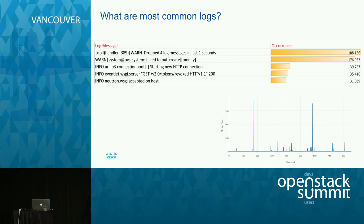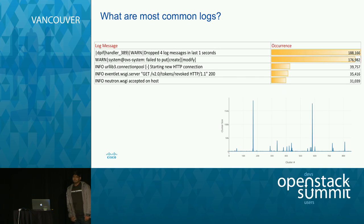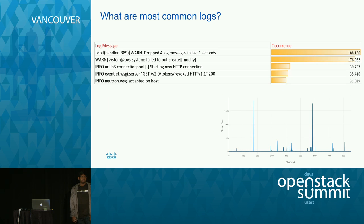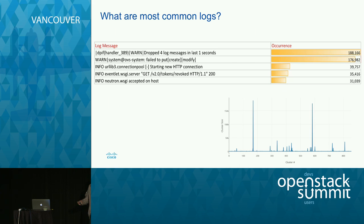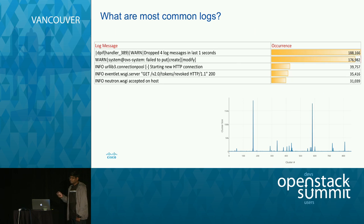At the very first step we found something weird. The first two biggest log groups, in the range of 180,000 frequency, were actually warning logs being generated by OVS. When we dug deeper, we found that when we were installing the cluster, we were supposed to put the first interface as the management interface and the second as the data interface, but we had done it the other way around. This analysis helped us realize right there that something was wrong with the cluster, and we rectified it.